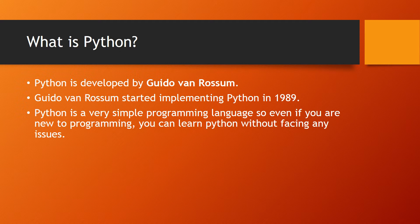Python was developed by Guido van Rossum. He started implementing Python in 1989. It is a very simple programming language that you can use even if you are a new programmer, and you can learn Python without facing any major issues.